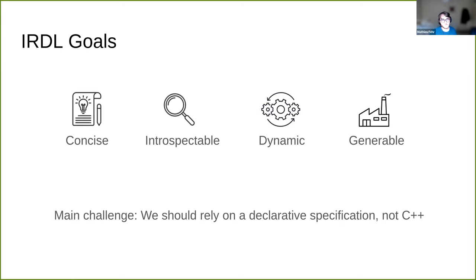There are four main features we want in IRDL. First, we want it to be concise — something easily written or read by a human. We want it to be introspectable, so you can look at how a dialect is constructed: how many operations you have, what the number of operands and results are. We also want it to be dynamic — you should be able to register dialects at runtime without recompilation. And we want it to be generable, so we can generate IRDL directly from metaprogramming or from Python.